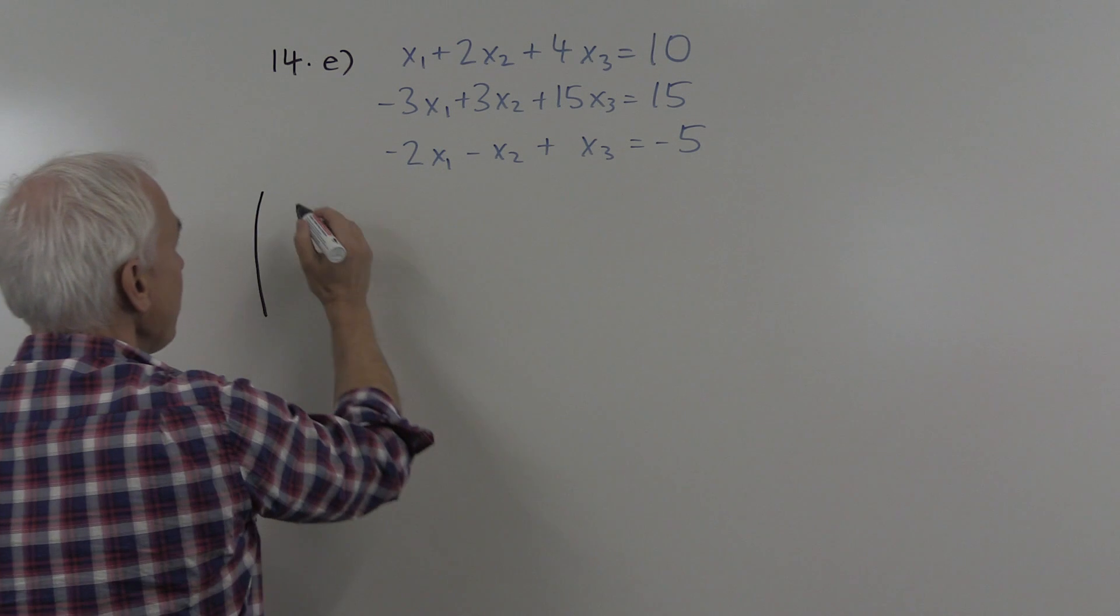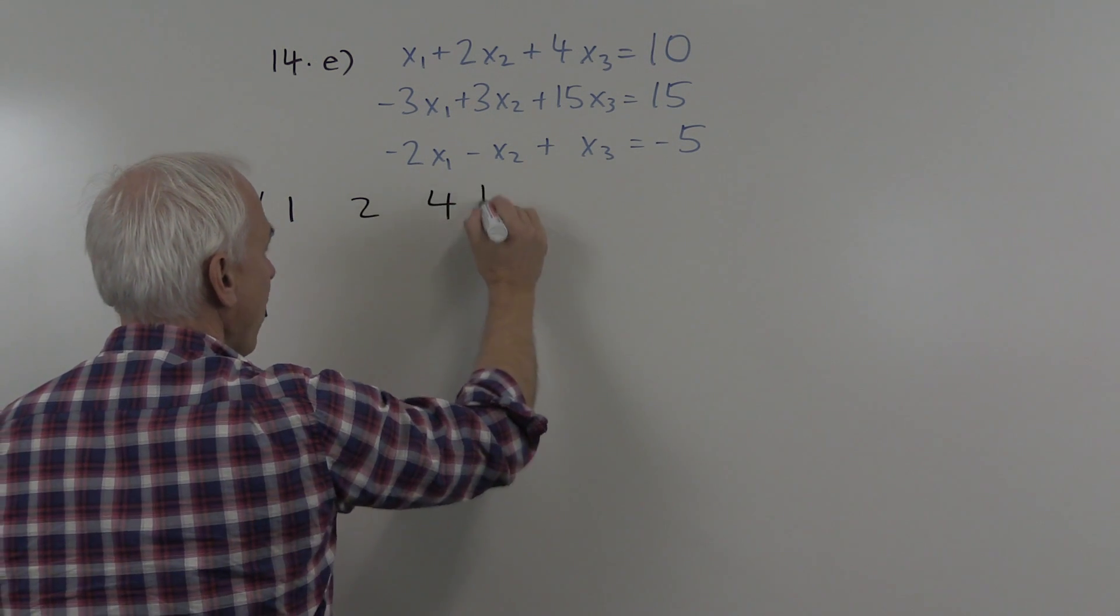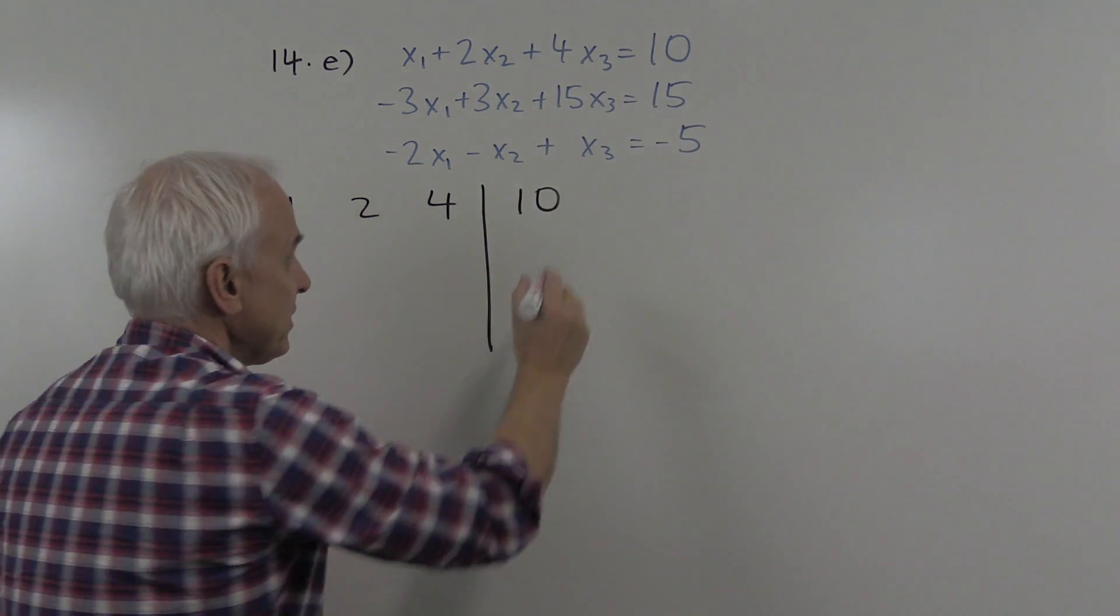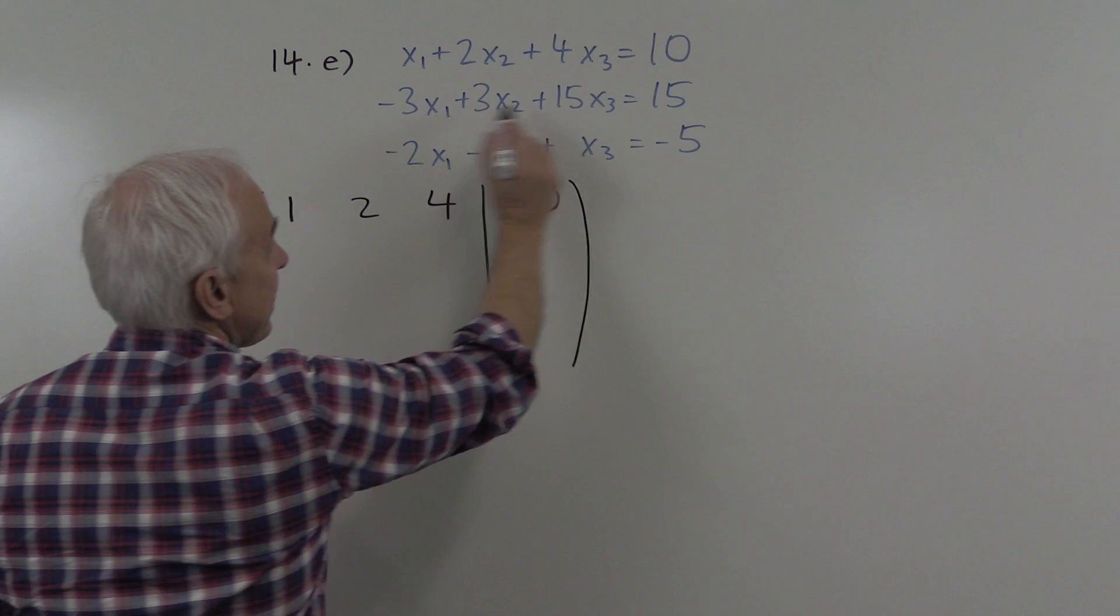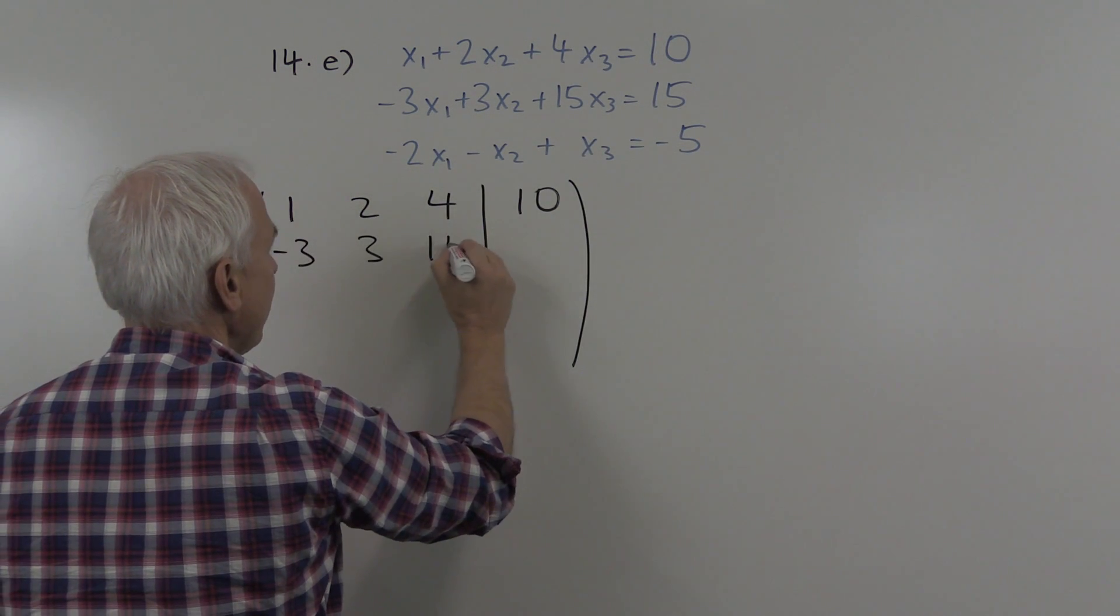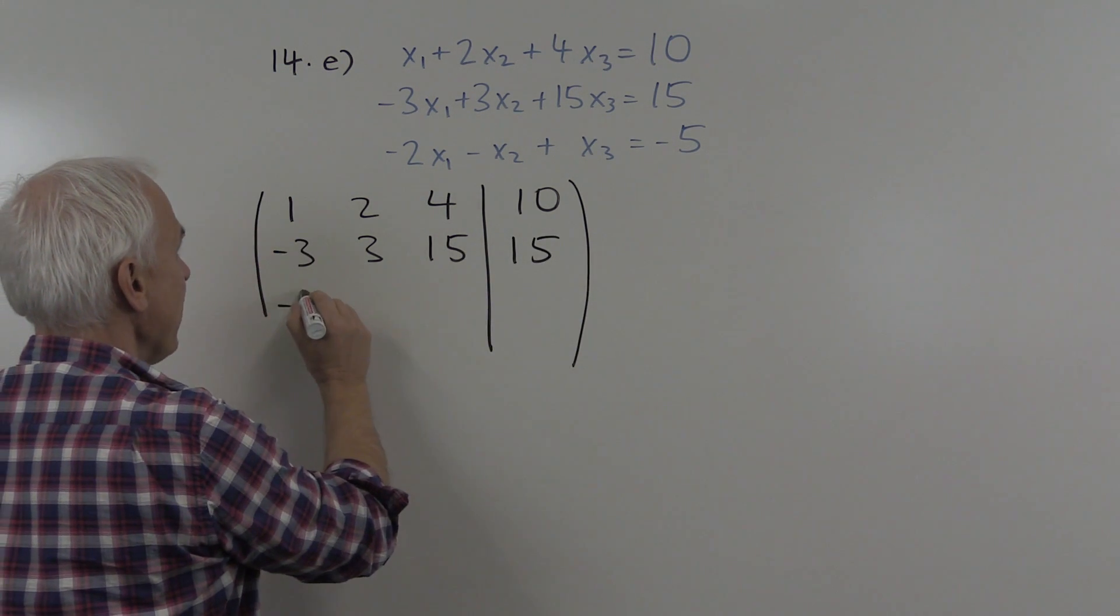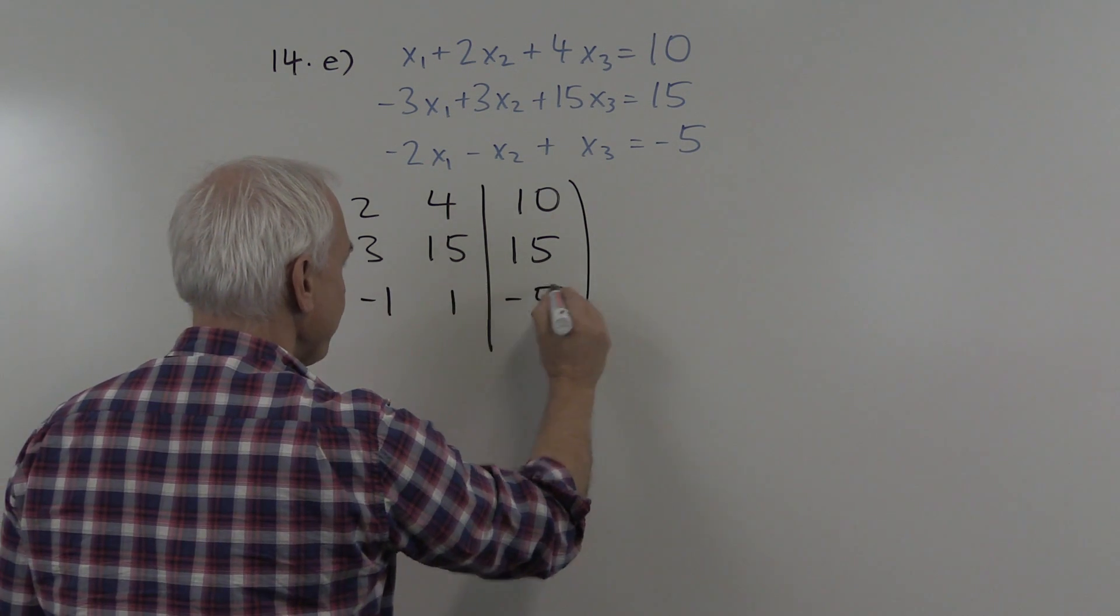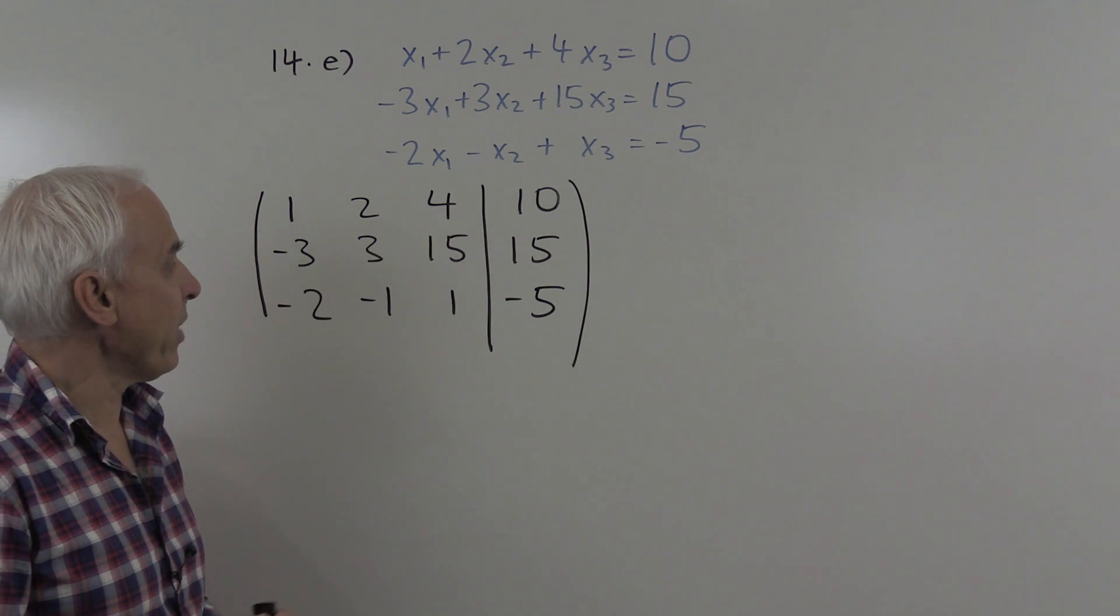We start with the first row which has coefficients 1, 2, 4. Then we'll draw a line and on this right hand side here we'll put the 10. Then the second equation we have minus 3, 3, 15 and 15 on the right hand side. And for the third equation minus 2, minus 1, 1 and minus 5. This is the augmented matrix for this system of equations.